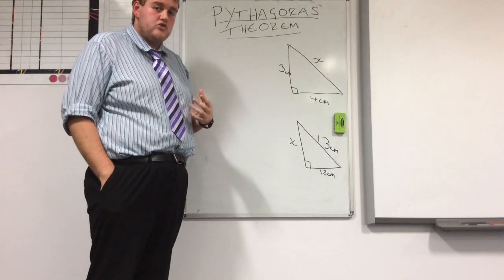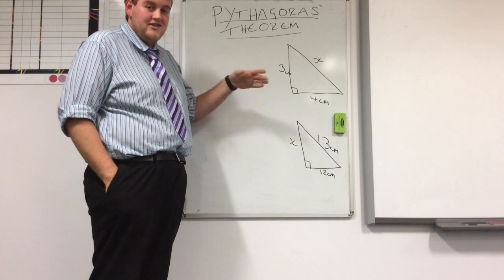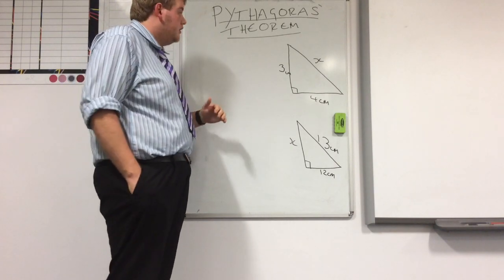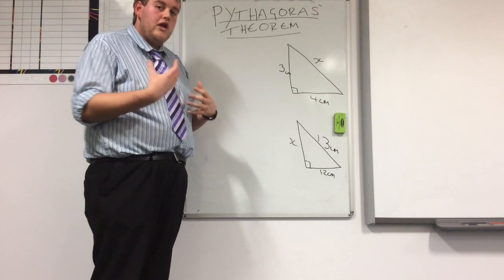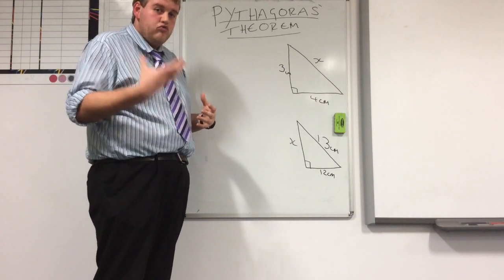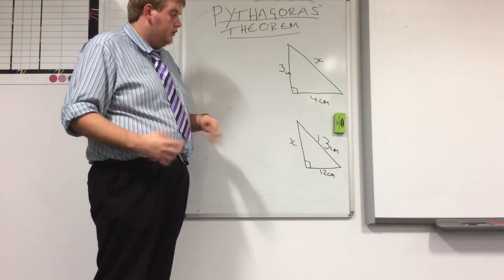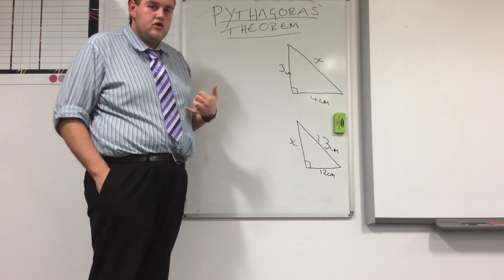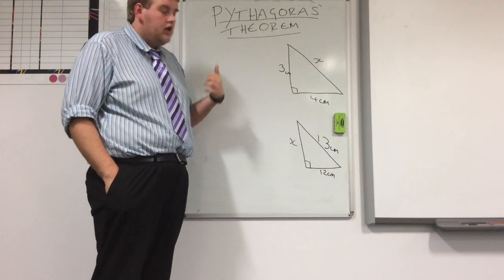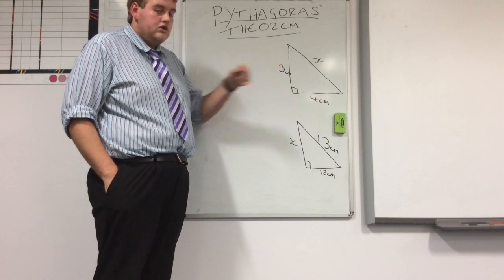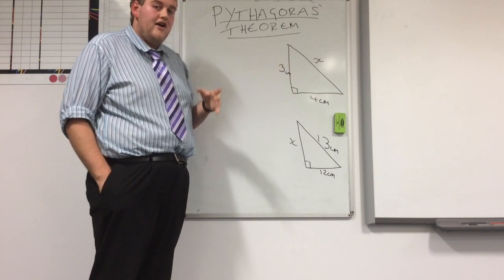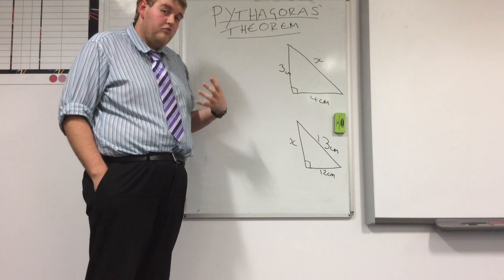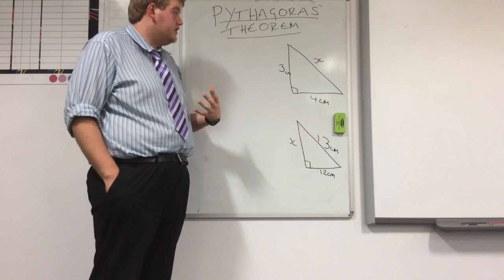A lot of people struggle with this — it's to do with right angle triangles. Today I'm going to slow it down a little bit. Pythagoras only ever works with right angle triangles. So when you've got a triangle with a right angle, that's when you use Pythagoras. If you have any other angles, the chances are it's going to be trigonometry, not Pythagoras. That's where a lot of people go wrong with this.